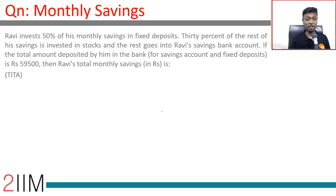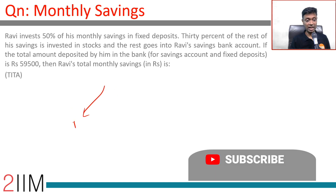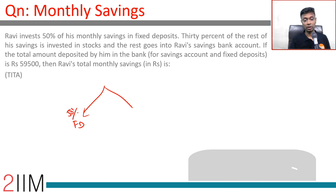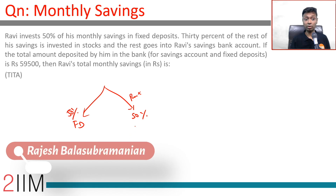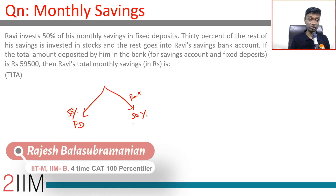We invest 50 percent of his monthly savings in fixed deposit. 50 percent of the rest of his savings is invested in stocks — so stocks is 15 percent of the total.